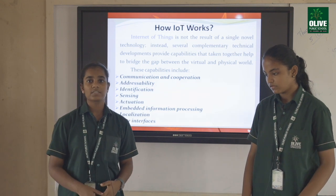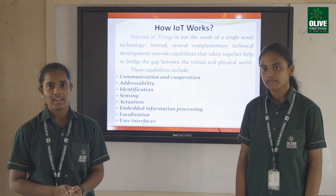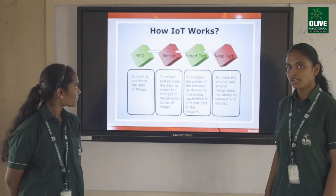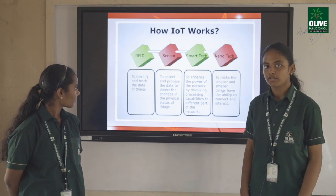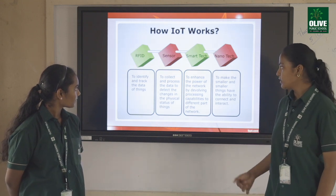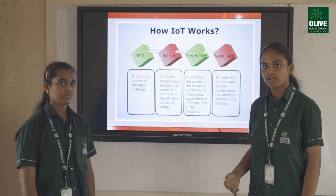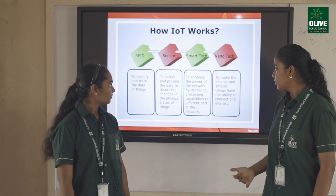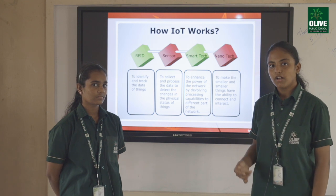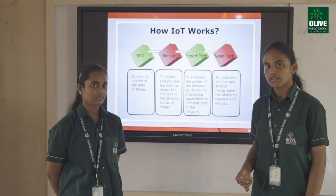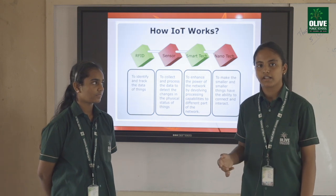Internet of Things works for communication, for better quality of life, and for a good and easy lifestyle. Let us see how IoT works. We have RFID, which is used to identify and track data of things. Then we have sensors, which are used to collect and process data received from the environment. Smart technology is used to enhance the power of the network by devolving the processing capabilities. Lastly, we have nanotechnology, which helps smaller things to interact and connect with the world.